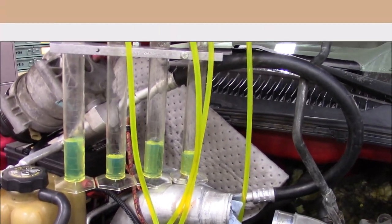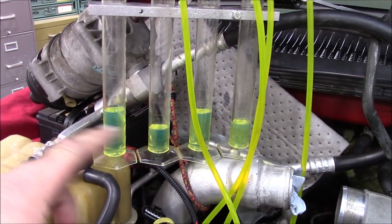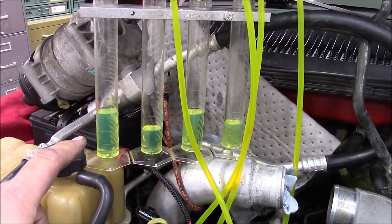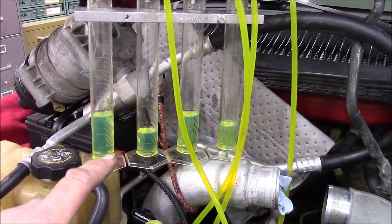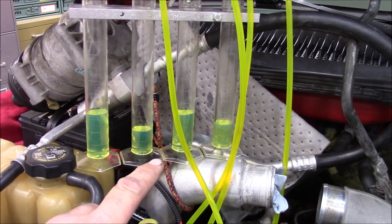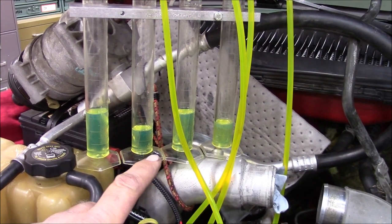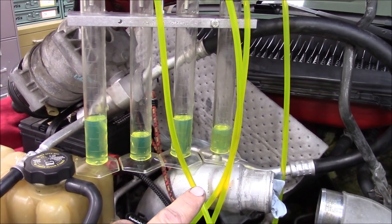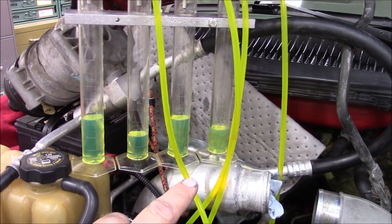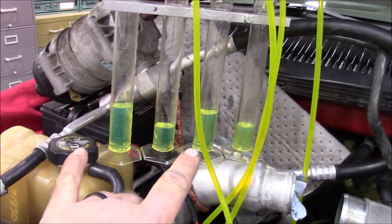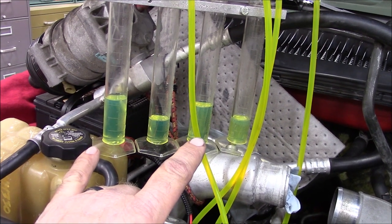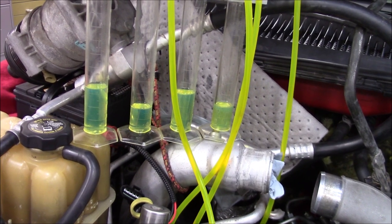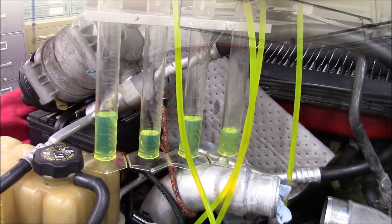All right, so we found, obviously we can see it. But cylinder number one, there was a four milliliter gain. Cylinder number three was two. Cylinder number five was five, so that one's definitely bad. So one and five definitely. And then seven was about a three, maybe two and a half to three. So there's our two suspect ones, one and five on the passenger side and four definitely on the driver's side.